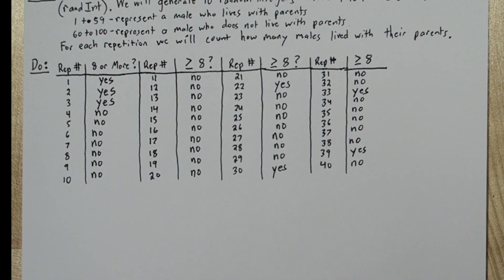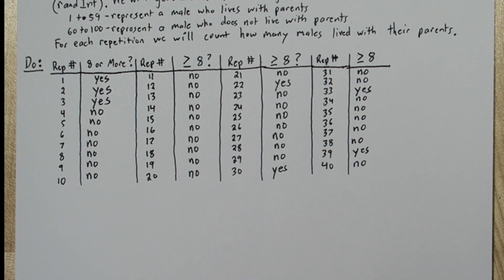And that's going to correlate with our 59% chance that each male in the sample still lives with their parents. Now that we've finished our 40 reps let's look through and see how many of our samples of 10 random numbers had 8 or more numbers between 1 and 59.